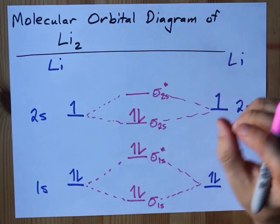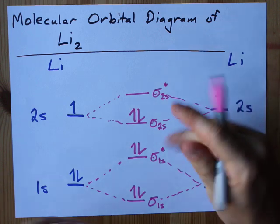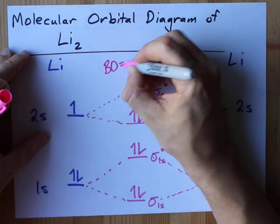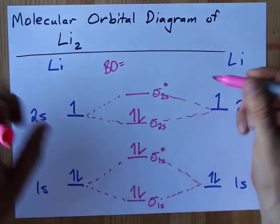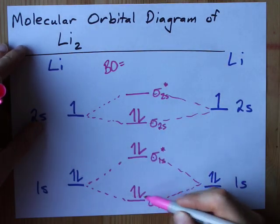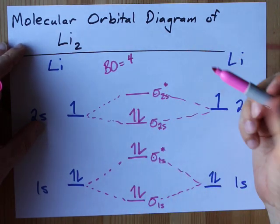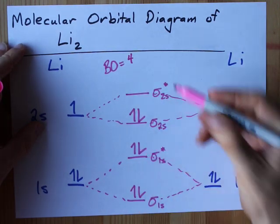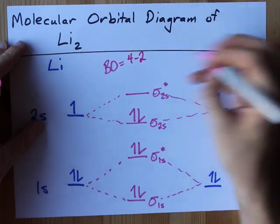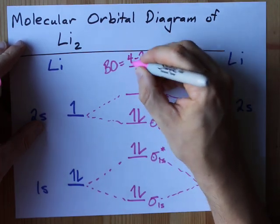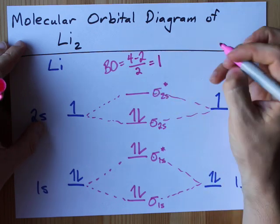That's going to give us a bond order of one. And if you don't believe me, the bond order is the number of electrons in bonding orbitals—one, two, three, four—minus the number of electrons in antibonding orbitals—that's none and two, which is two—cut in half. Four minus two is two, divided by two is one.